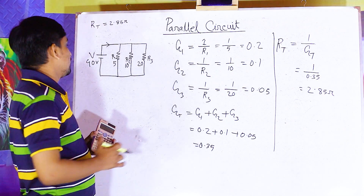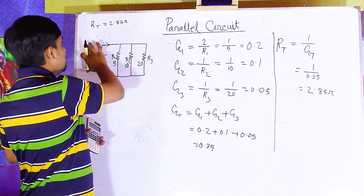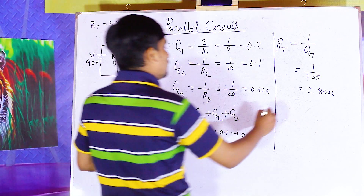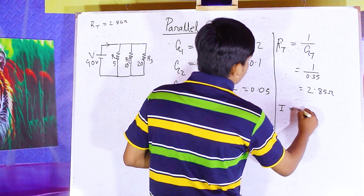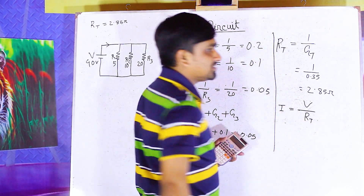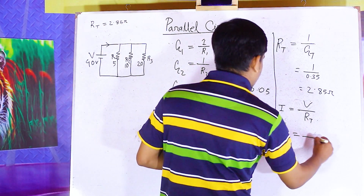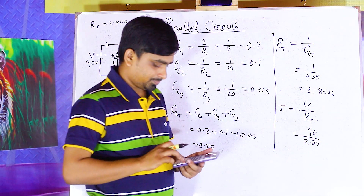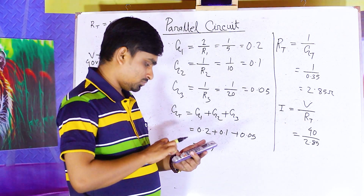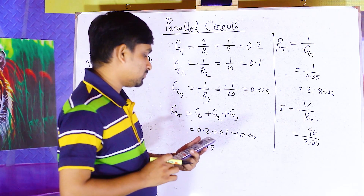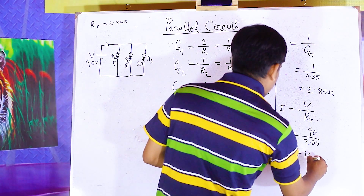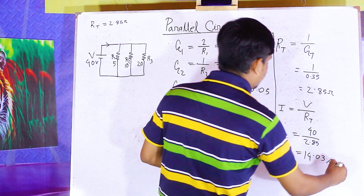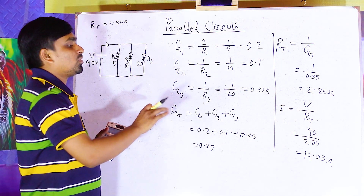Now, looking at the voltage and the resistance, we can find the total circuit current. Current I equals voltage divided by total resistance, which equals 40 divided by 2.85, equals 14.03 ampere. So our total circuit current is 14.03 ampere.